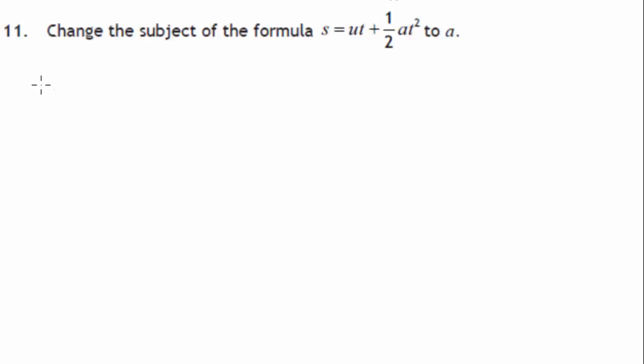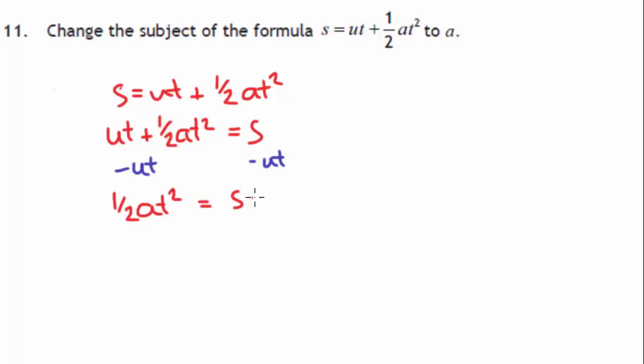And then go on to your next one. And let's change the subject to a. So what we've got is we've got s equals ut plus a half a t squared. So I'm just going to rewrite this out, so it's the other way. ut plus a half a t squared equals s. So the first thing you do, you always take care of anything that's been added or subtracted from the letter that you're after. So I'm going to subtract ut from this side, so I'm going to have to do it from this side. So to keep it equal, you have to do whatever you're doing one side to another. So that is going to be a half a t squared equals s minus ut.